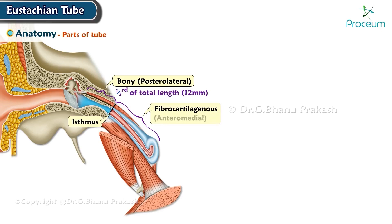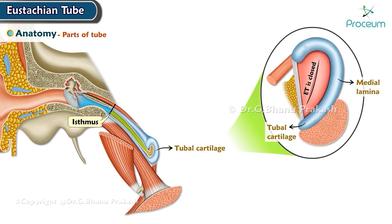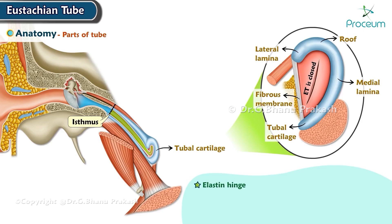The anteromedial fibrocartilaginous part is towards the nasopharynx and forms two-thirds of the tube, which is 24 millimeters. This is made of a single piece of cartilage that folds upon itself and forms the medial lamina, roof, and a part of the lateral lamina. The rest of the lateral lamina is made of fibrous membrane. The elastin hinge is a part of the Eustachian tube rich in elastin fibers, situated in the roof at the junction of the medial and lateral lamina.